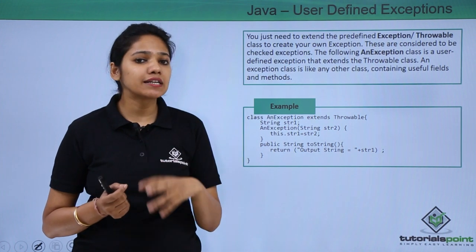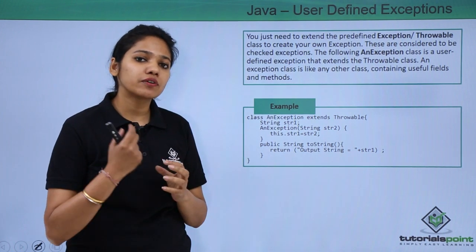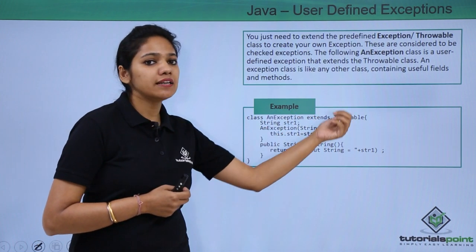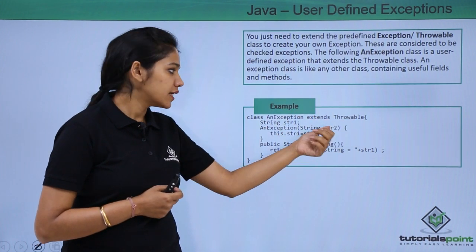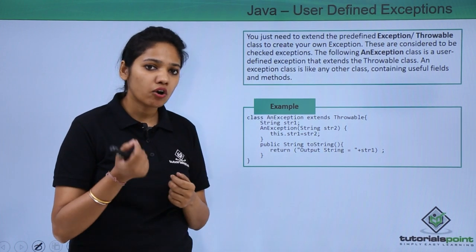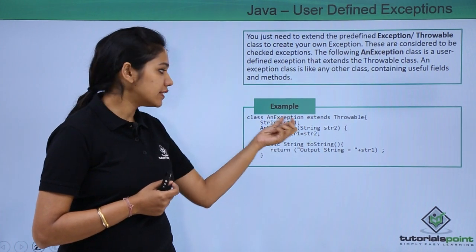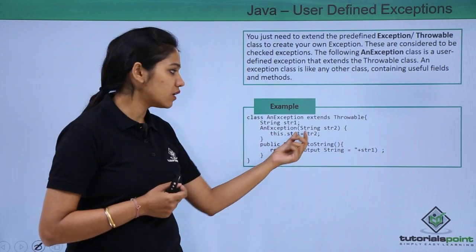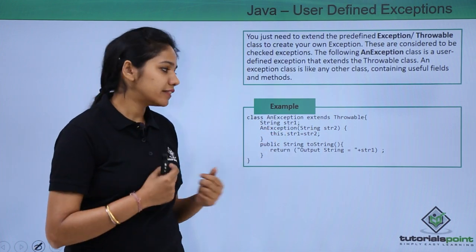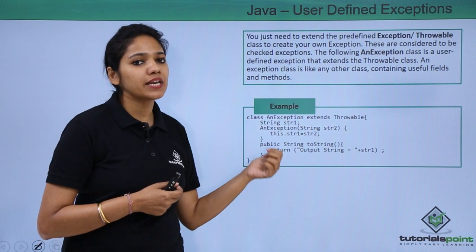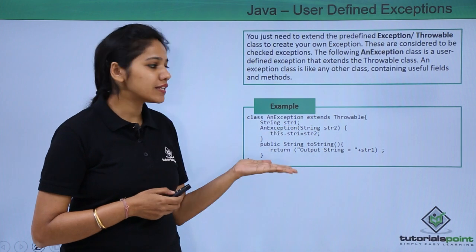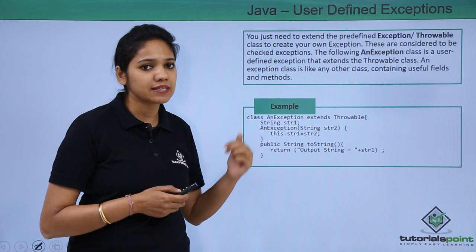This Throwable class will consist of the cause — what kind of problem has occurred — and all that information. Therefore, this class extends the Throwable class. In this, we have created a variable of String type, and the constructor will receive that string and then provide the output. Let us move to another class to understand what kind of exception it is.